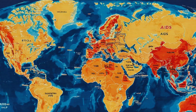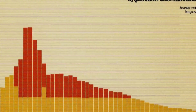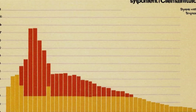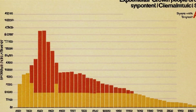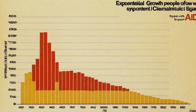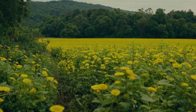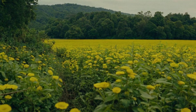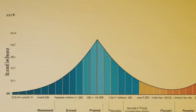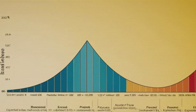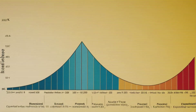The same thing happens with the AIDS epidemic. Right now, the number of people with AIDS symptoms is growing exponentially, but it can't continue at that rate forever. There will be natural impediments that will slow down or stop the growth. So, even though exponential growth can seem overwhelming, it always has a limit.